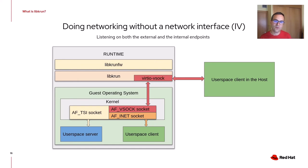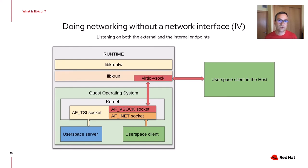What happens if instead of a client we have a user space server using a TSI socket? In this case, once the server calls listen, the TSI socket starts listening on both the INET personality and the VSOCK personality. So there is a listening port within the guest context and a listening port outside the guest context in the runtime context, managed by the Virtio VSOCK server integrated in LibKRUN. Connections from a client inside the guest are fulfilled through the INET personality, and connections from a client outside the guest are fulfilled through the VSOCK personality, with the VSOCK server acting as a proxy.